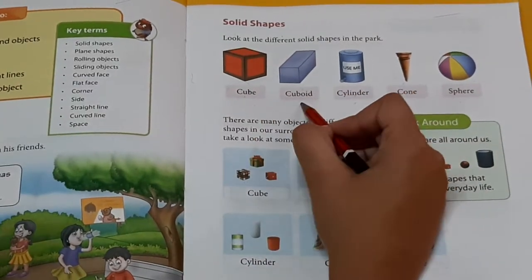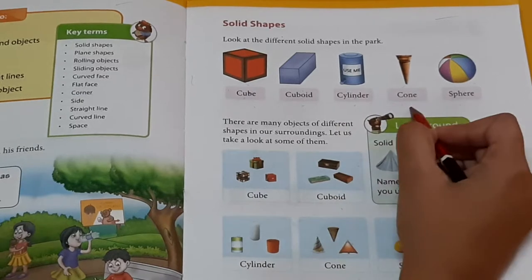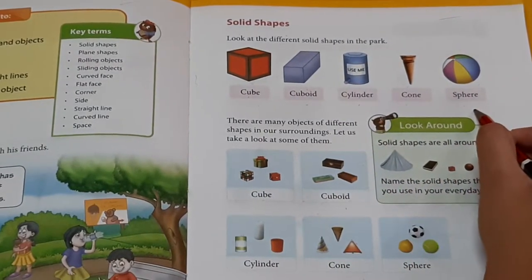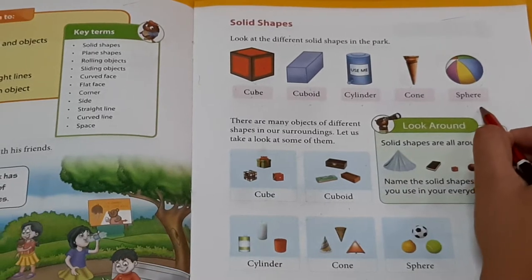Cube, cuboid, cylinder, cone, sphere are called solid shapes. Now, we shall go through the video.